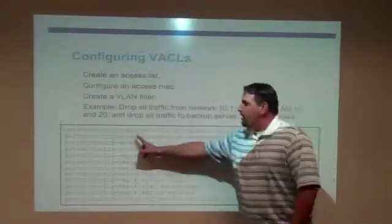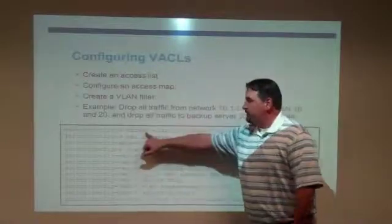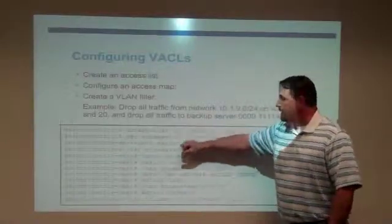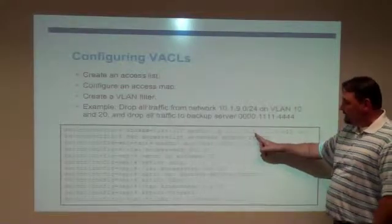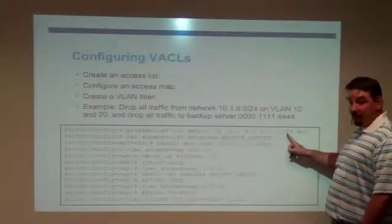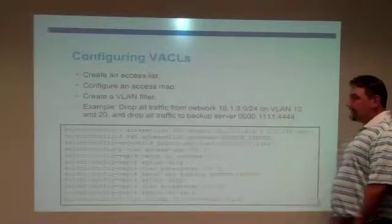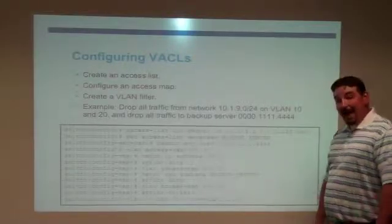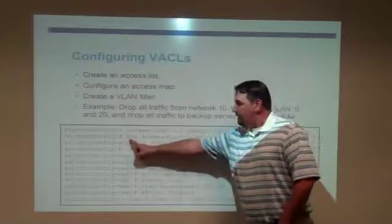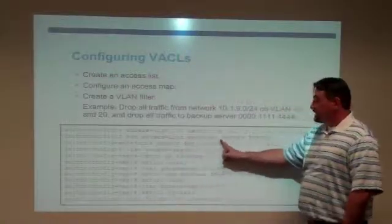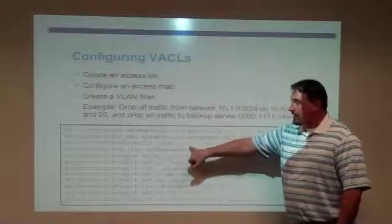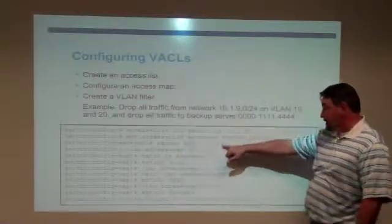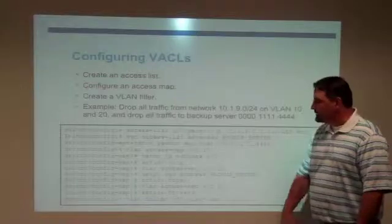So in this case, we've gone through and created our access list. So I'm in global config, and I created my access list, access list number 100, that permits all IP traffic from the 10.1.9.0 subnet with a 000255 wildcard mask to any destination. I've also got a MAC address access list. My MAC address access list up over here on the top is an extended access list called backup server, and it permits any source IP address to talk to this particular MAC address. This is our backup server's MAC address.